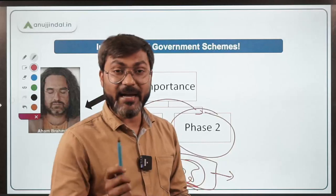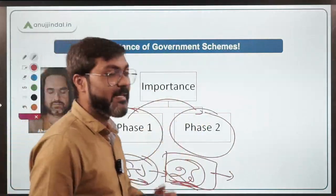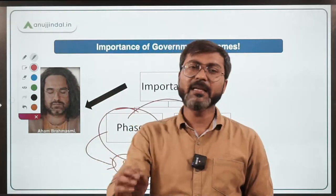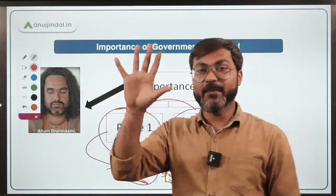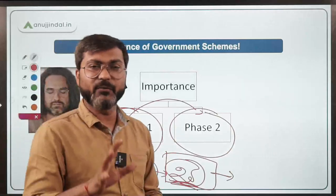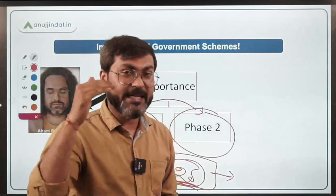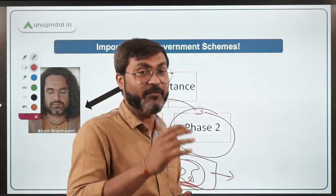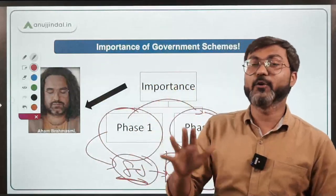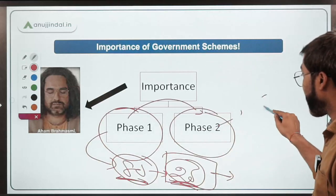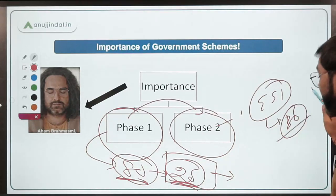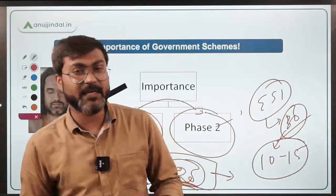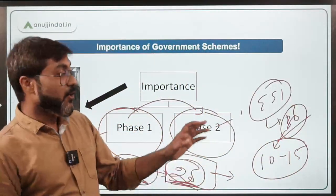If you want to attempt those 20 questions, you need in-depth knowledge of each government scheme. Questions are framed like: 'Which of the following statements is incorrect with respect to Pradhan Mantri Fasal Bhima Yojana?' — and you have to identify the correct or incorrect statement. So you need to study government schemes in detail. In Phase 2, out of 30 objective questions, you can expect 10 to 15 questions from government schemes.